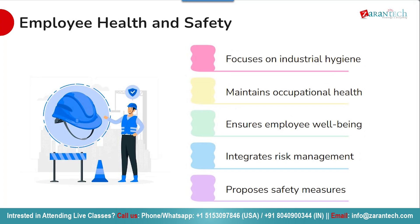In addition to product safety, SAP EHS has strong capabilities for ensuring employee health and safety. It supports industrial hygiene and occupational health initiatives to ensure workforce well-being, and integrates these health and safety considerations into the overall operational risk management processes. Based on identified risks and exposures, it can propose appropriate safety measures to protect employees.